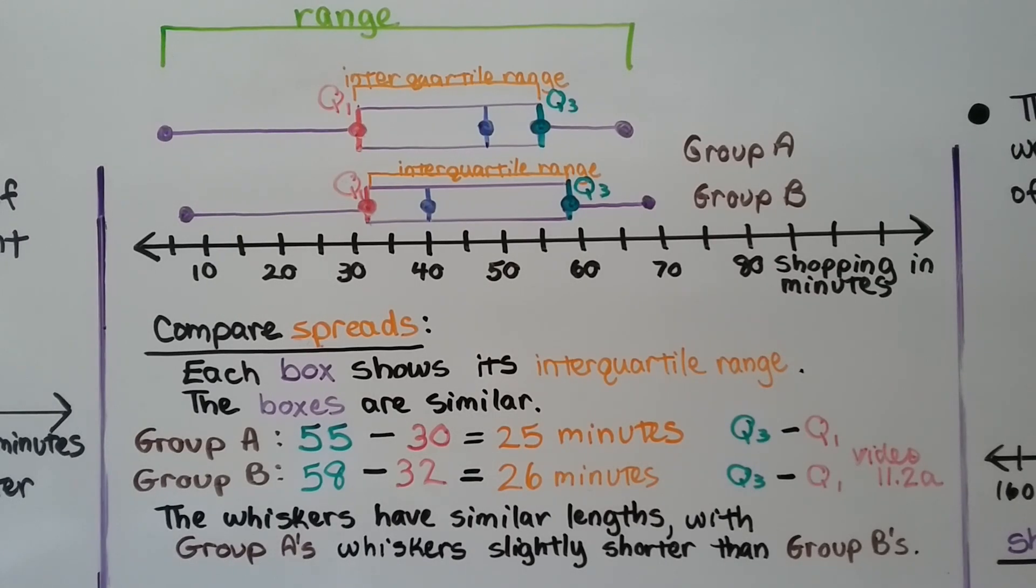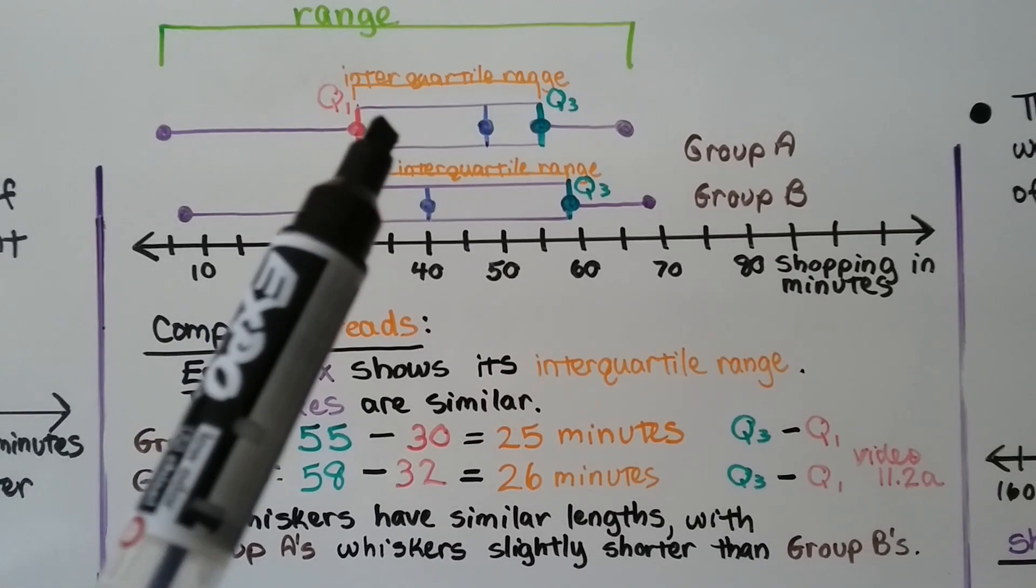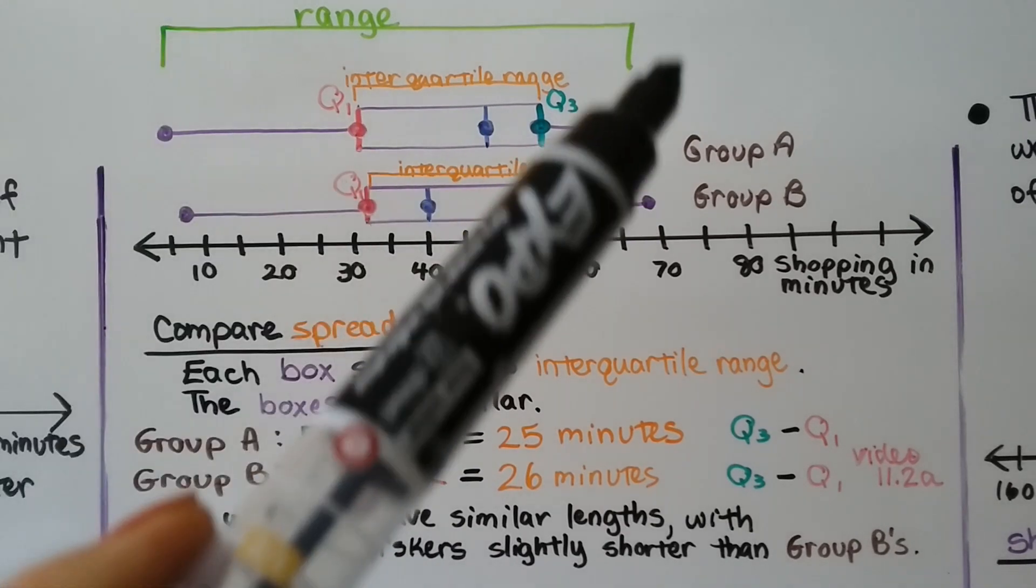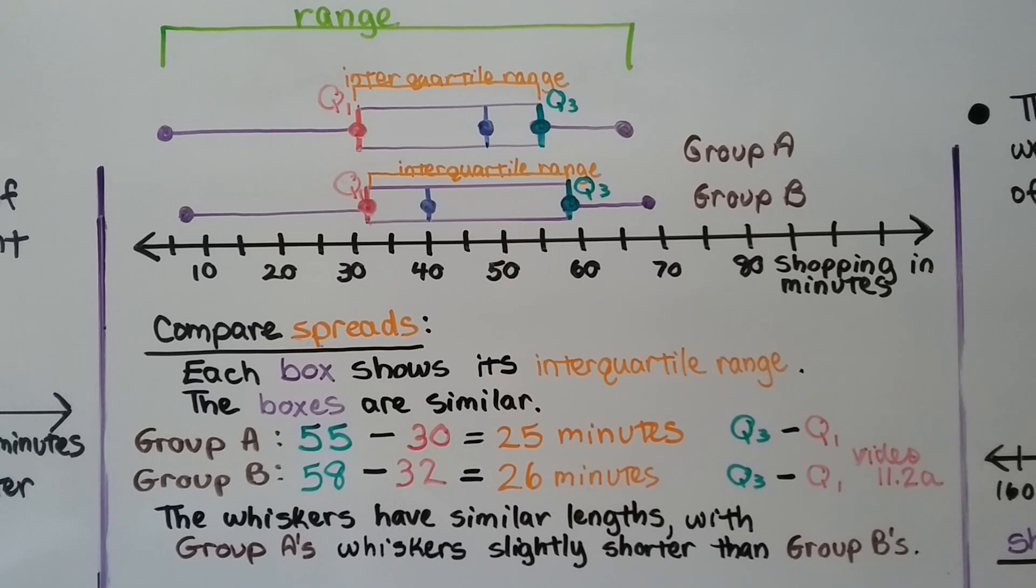We can compare their spreads. Each box shows its interquartile range. The interquartile range is the length of the box. The range goes from the least to greatest between the values in the data set.